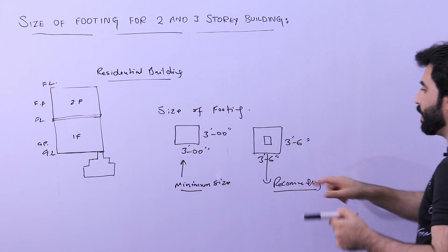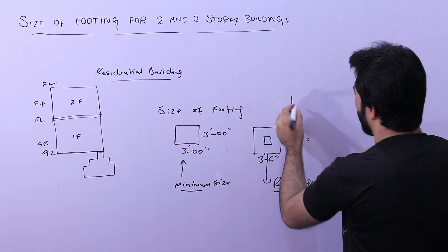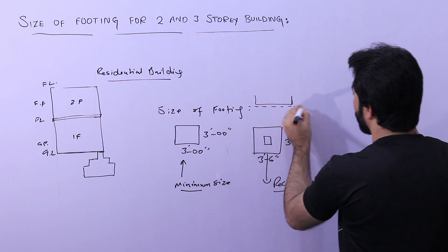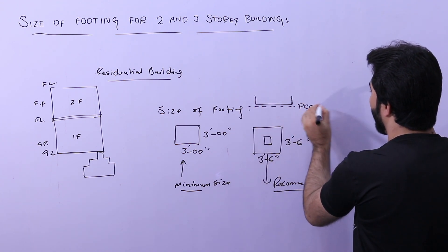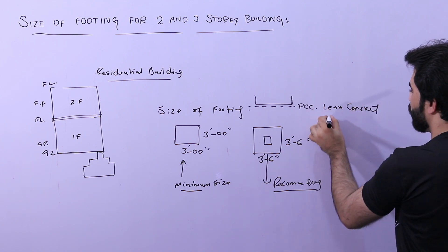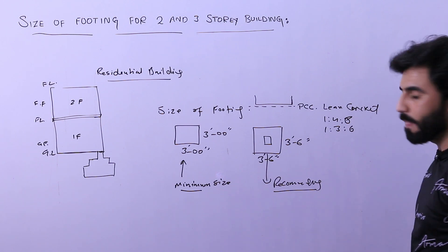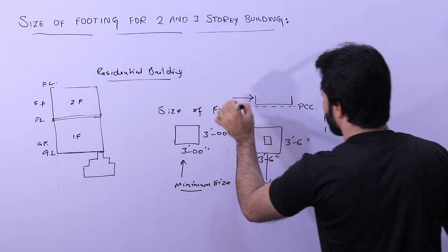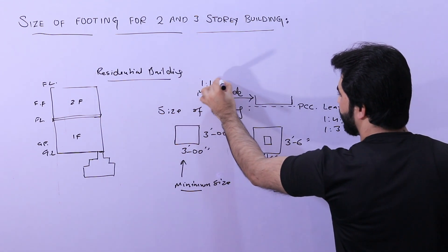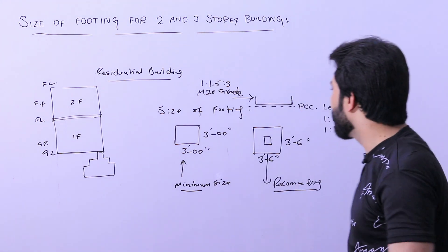Now let me create a section. You can see the section here. First of all, PCC — plain cement concrete, also called lean concrete — should be provided. It should be a 1:4:8 ratio, but I am recommending 1:3:6, which is best. For the footing itself, use a minimum M20 grade concrete, which has a ratio of 1:1.5:3 — where one part is cement, 1.5 parts is sand, and three parts are aggregate.